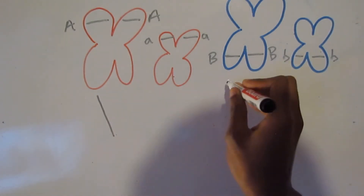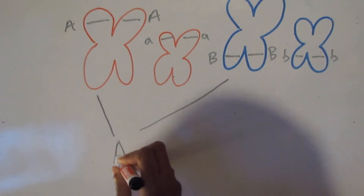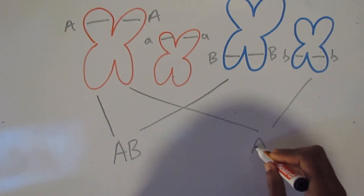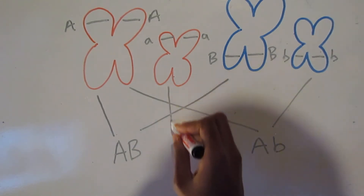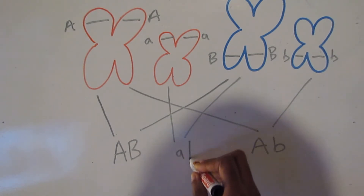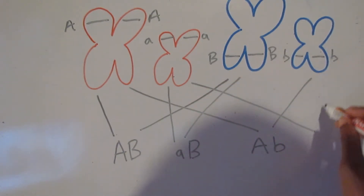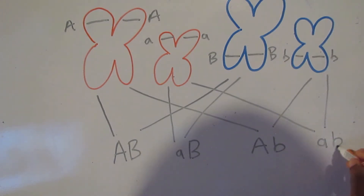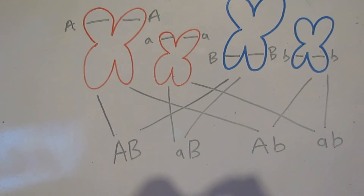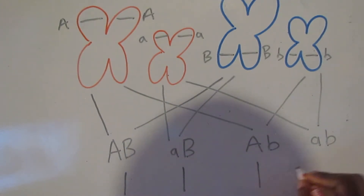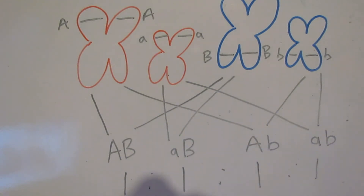When genes are not linked, if we were to do a cross of these genes, we can get four possible outcomes. The ratio of getting all four outcomes is 1:1:1:1, so equal. This is how variation exists, because during crossing over and during independent assortment, these chromosomes can match up into a variety of different combinations.